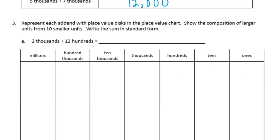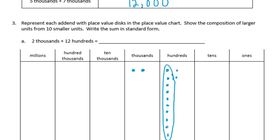Number 3: represent each addend with place value disks in the place value chart, show the composition of larger units from ten smaller units, and write the sum in standard form. We have 2 thousands plus 12 hundreds. Let's write those in the place value chart — two thousands and twelve hundreds, grouped in tens. We can take one group of ten hundreds and transfer it over into the thousands, giving us three thousands and two hundreds, or 3,200.